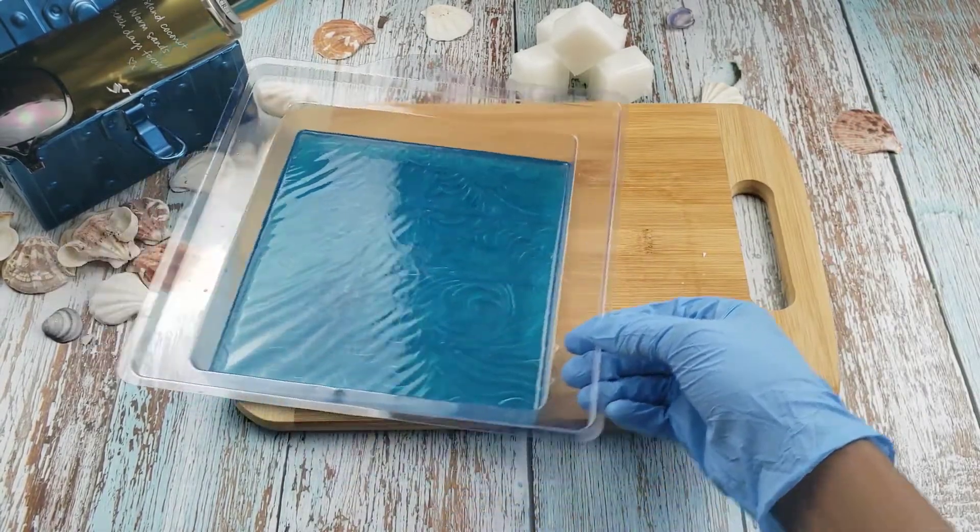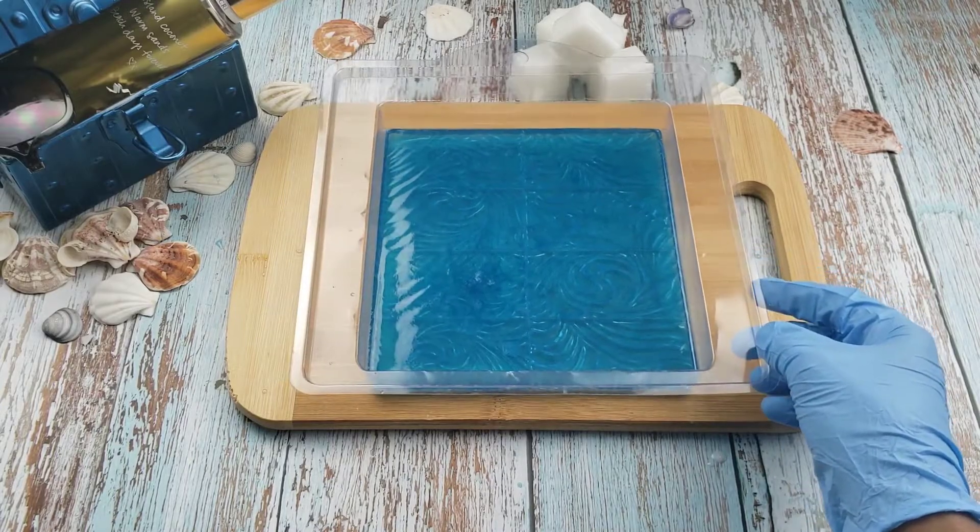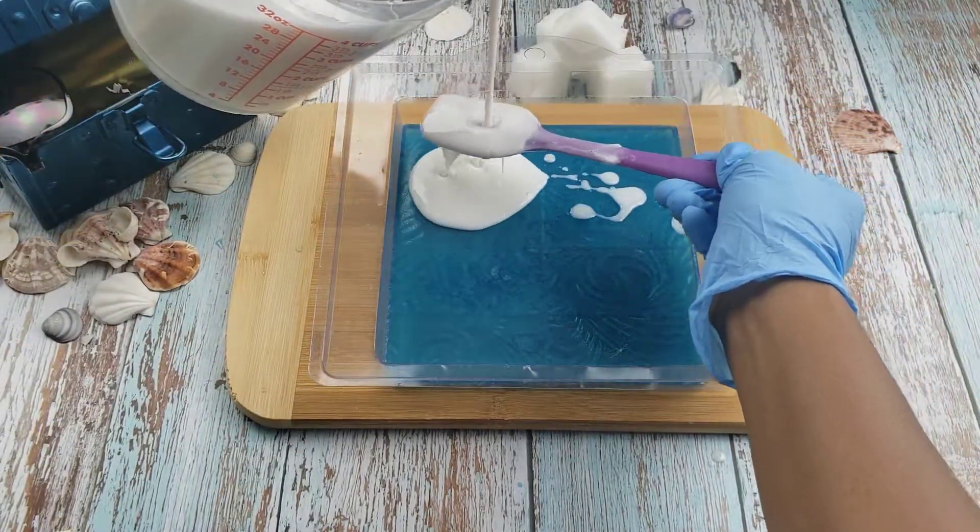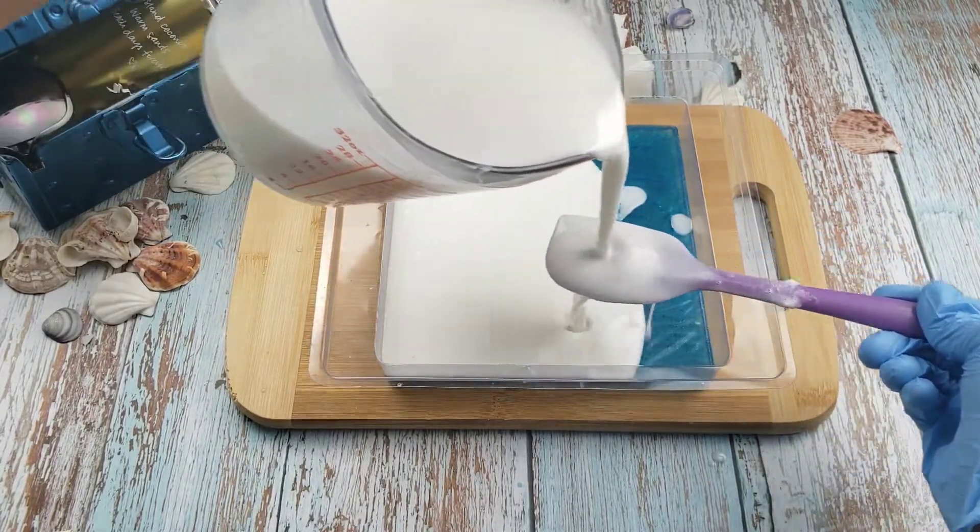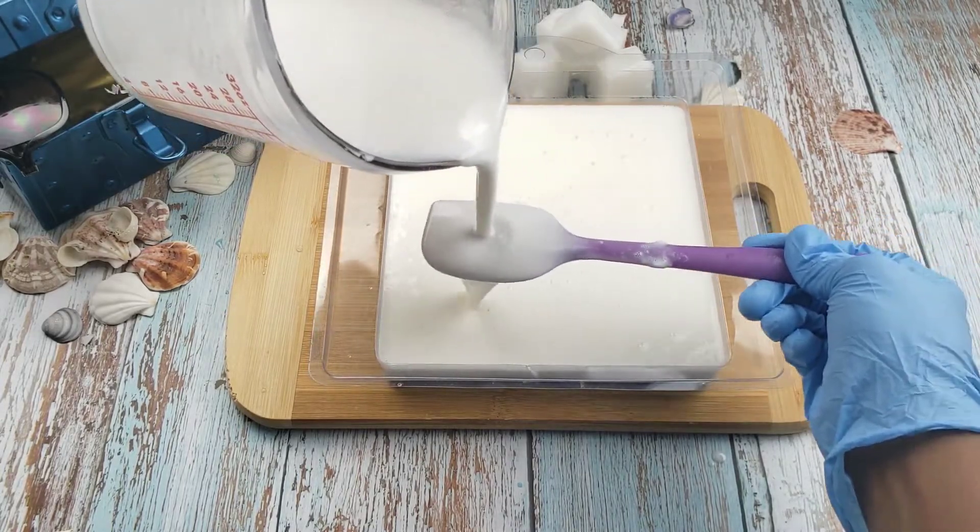Now I'll pour this atop my somewhat hardened clear base, using the spatula to lessen the impact on the clear base that is still hardening. Again I'll spritz with some alcohol to burst the bubbles, then leave as undisturbed as I can to harden fully.